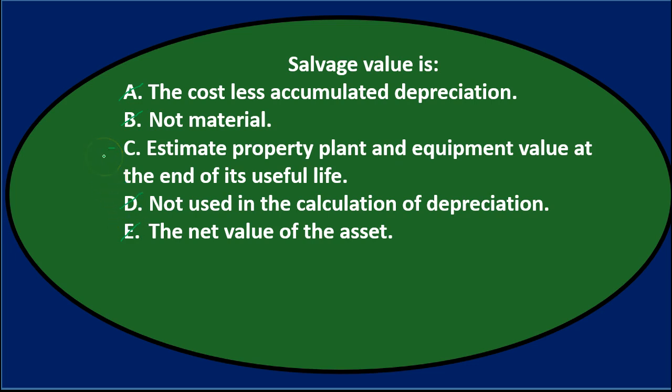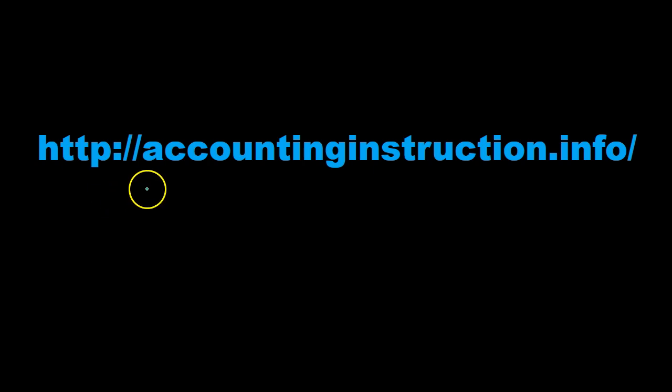Salvage value is C — estimated property, plant, and equipment value at the end of its useful life. That means we're estimating what the property, plant, and equipment will be worth and therefore sold for at the end of the time we use it — its useful life. For more accounting information and accounting courses, visit our website at accountinginstruction.info.